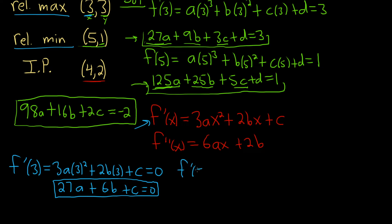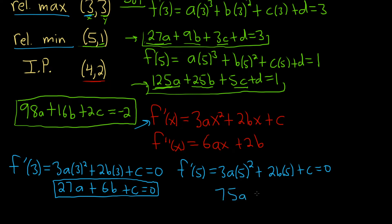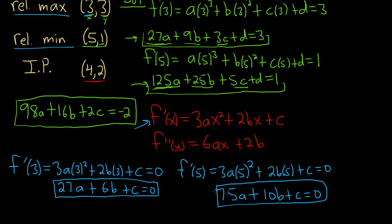Similarly, since we have a min at (5, 1), 5 is also a critical number, so f'(5) = 0. Plugging in: 3a(5²) + 2b(5) + c = 0, which gives 75a + 10b + c = 0. Now we have three equations in a, b, and c, so in theory we can find all three.